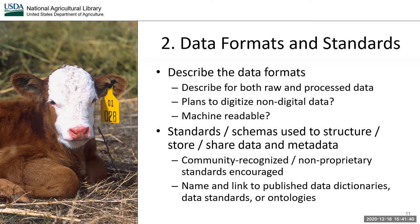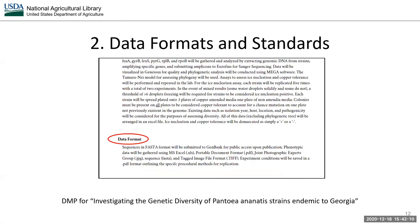What standards or schemas will be used to structure, store, or share the data and metadata? Community-recognized and non-proprietary standards are strongly encouraged. Be specific when noting this information. Name and link to any published data dictionaries, data standards, or ontologies that you are using — examples include ICASA master variable list, gene ontology, or integrated taxonomic information system. If data will be deposited in a professional database or repository, refer to their data and metadata standards. The example DMP notes all data file formats resulting from various parts of their project — this is genetic data and the FASTA format is a community standard for storing this type of research.